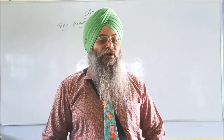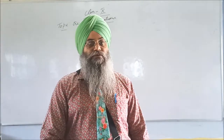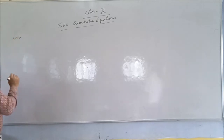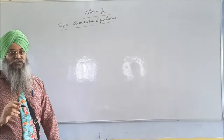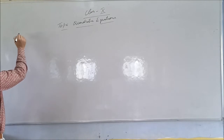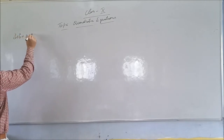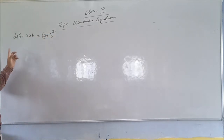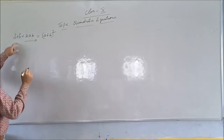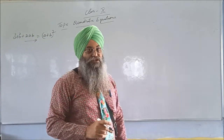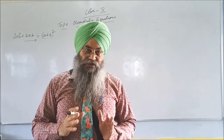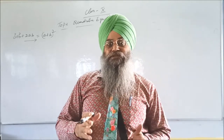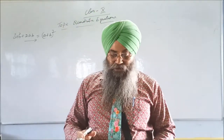First of all, what is the completing the square method? If A and B are any real numbers, then A squared plus B squared is equal to (A plus B) whole square. From this form to this form — that means it is the completing the square method: making a square of two numbers, an algebraic expression making a quadratic equation.